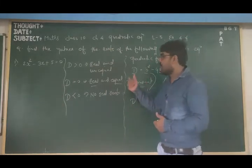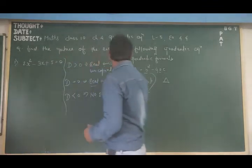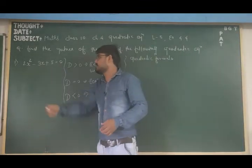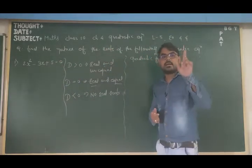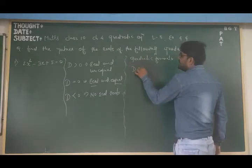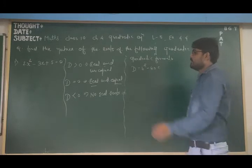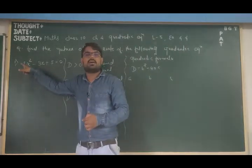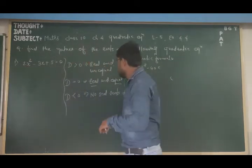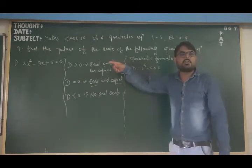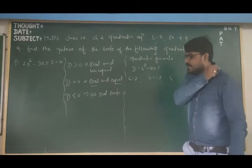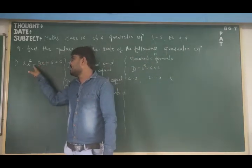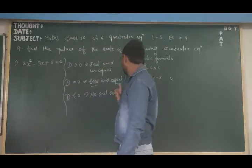Now let's solve our first example using the quadratic formula. The equation is 2x² - 3x + 5 = 0. We know the discriminant formula: D equals b squared minus 4ac. First, define the values of a, b, and c from the given equation. The coefficient of x² is 2, so a equals 2. The coefficient of x with its sign is minus 3, so b equals minus 3.